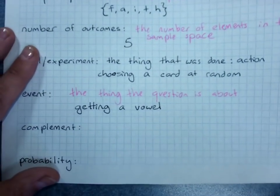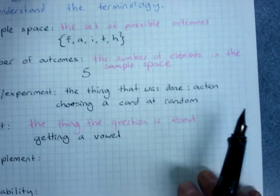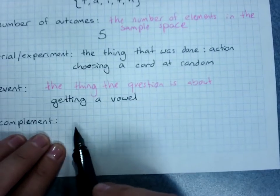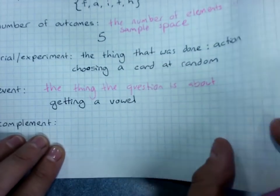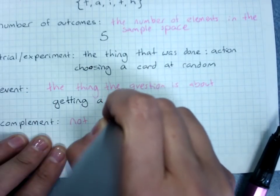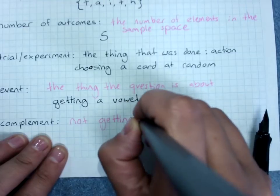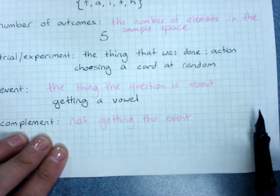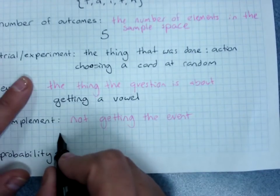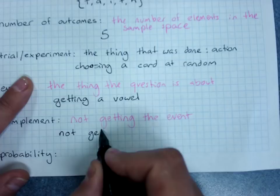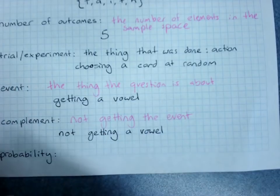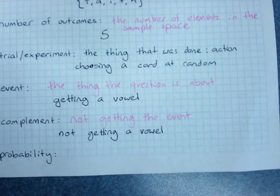Now the complement of the event is the opposite, not getting the event. So the complement to getting a vowel is not getting a vowel.